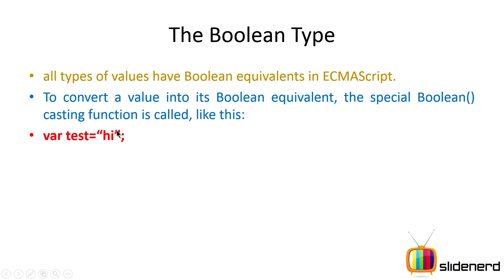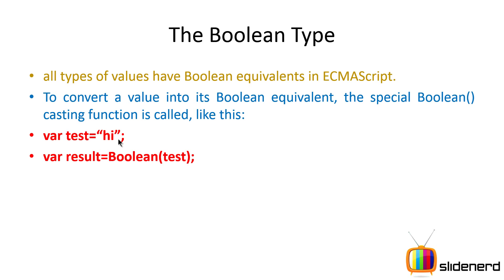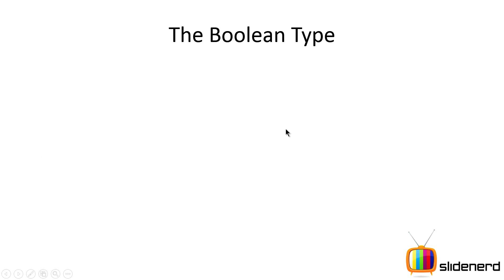If I wanted to convert this to a boolean, I would call the Boolean function and pass the variable 'test' inside the parentheses. This function takes the value of 'test' — which is 'hi' — tries to convert it to true or false, and stores that result in a variable called 'result'. You might wonder: how can you convert 'hi' to true or false? Let's look at that.